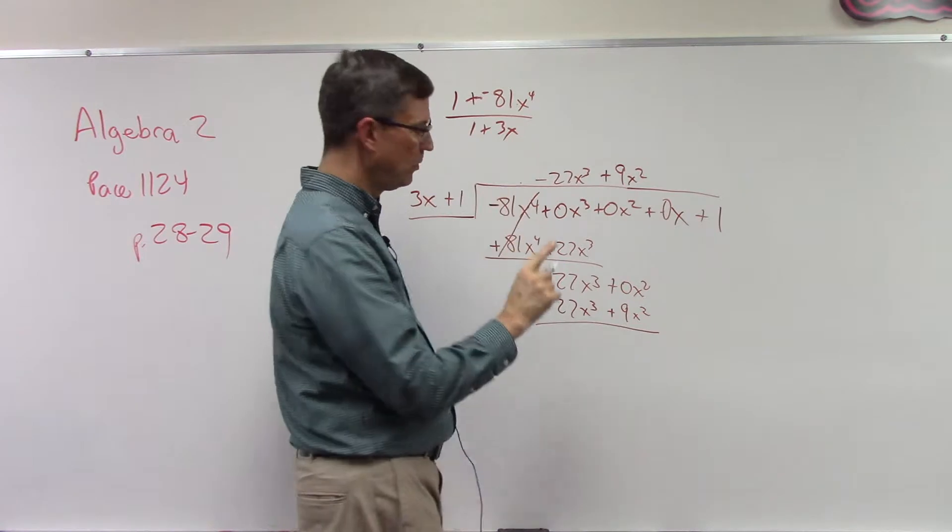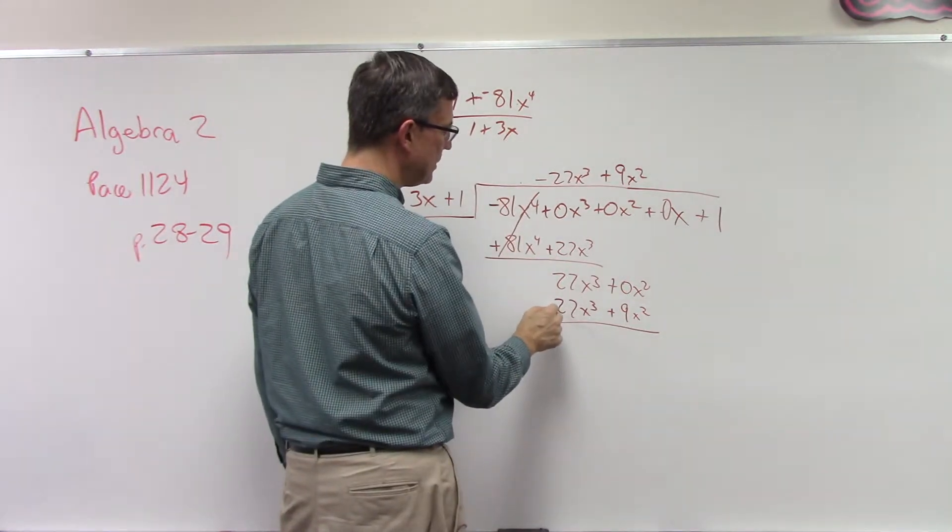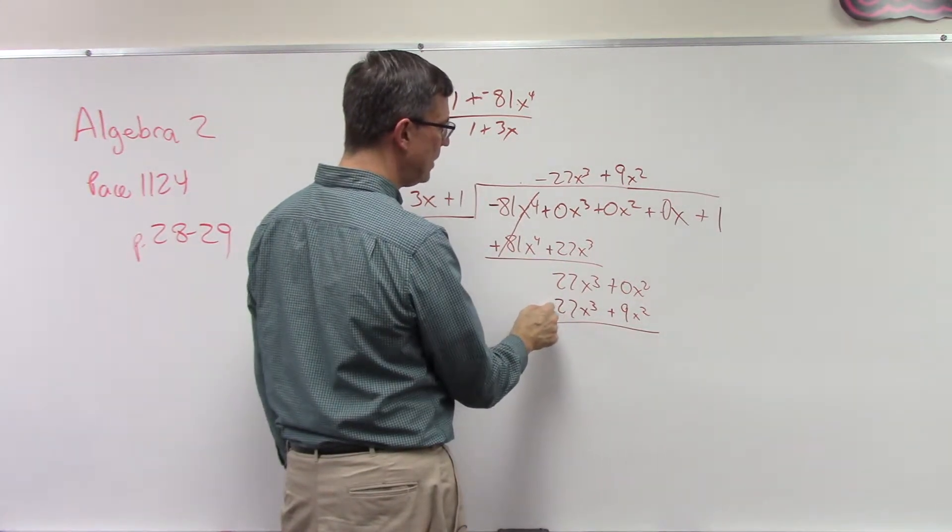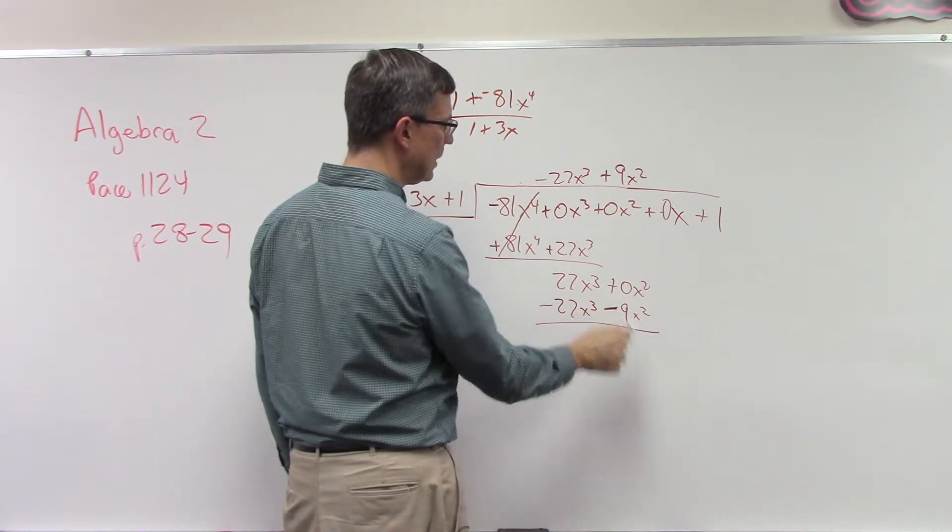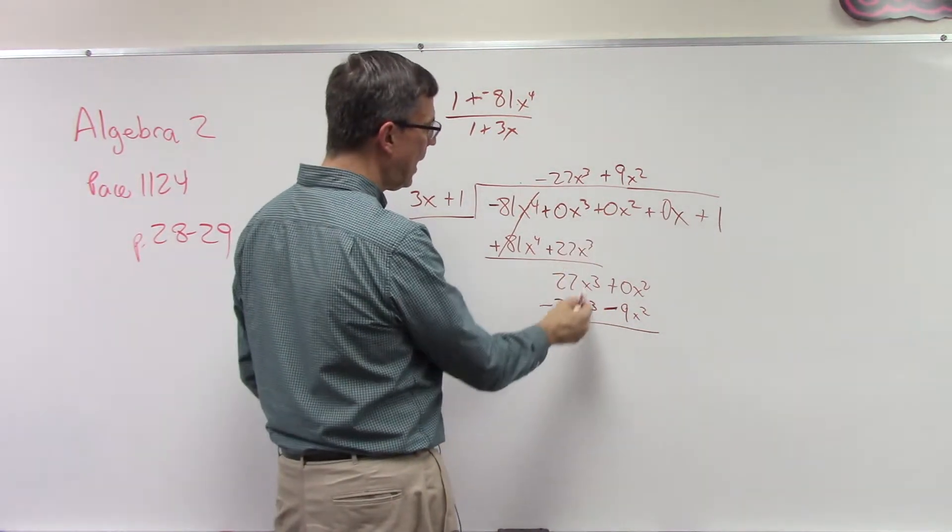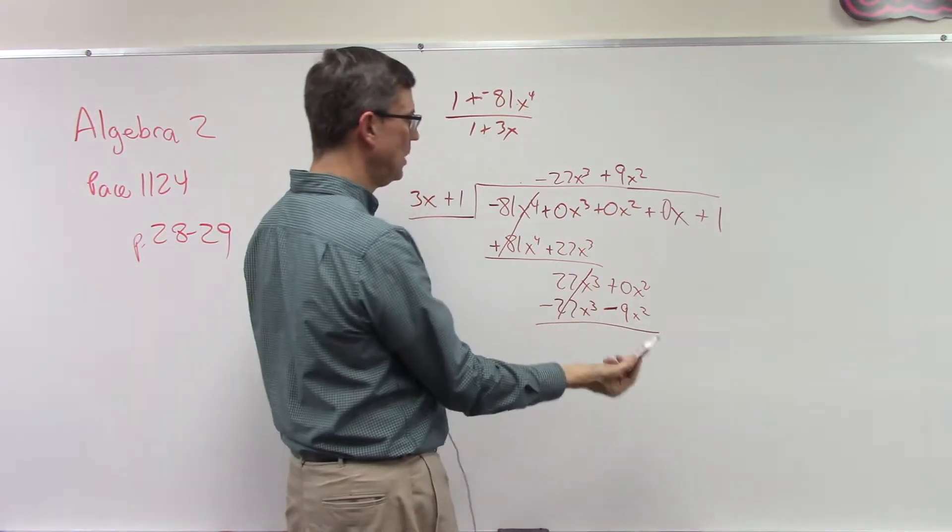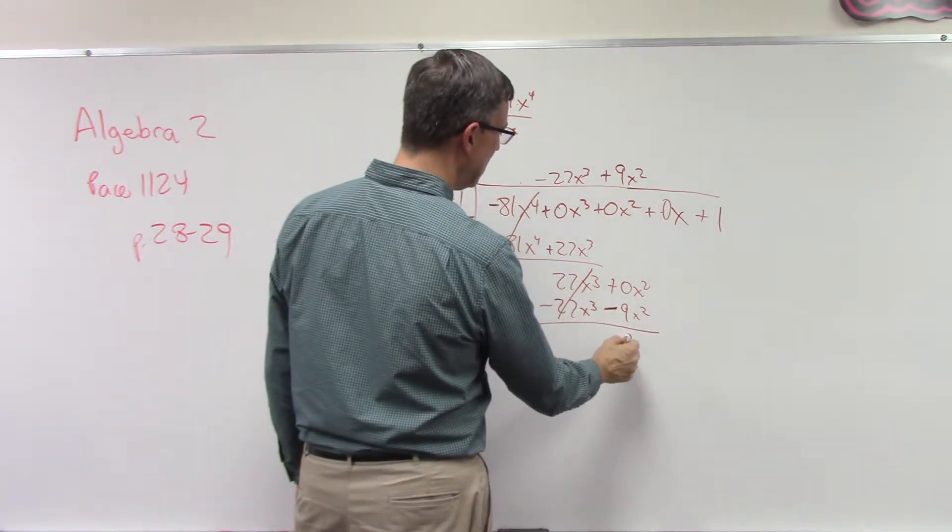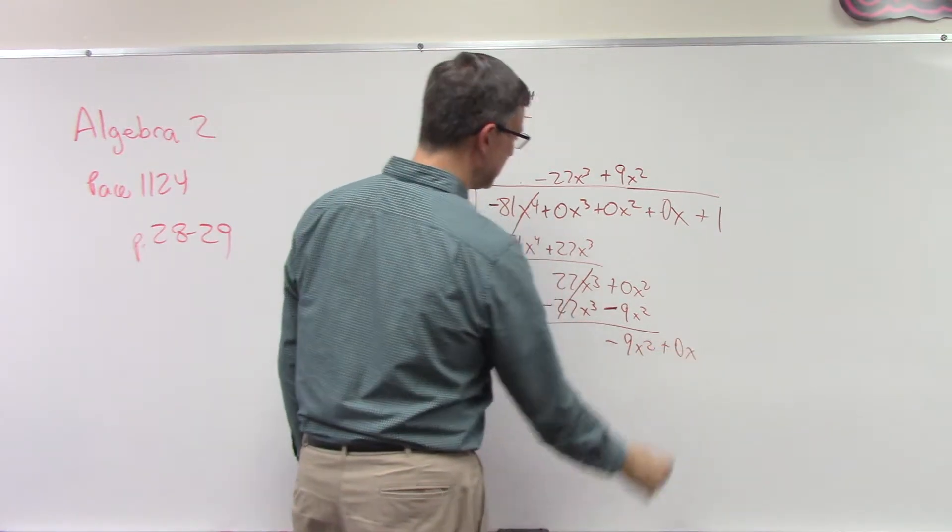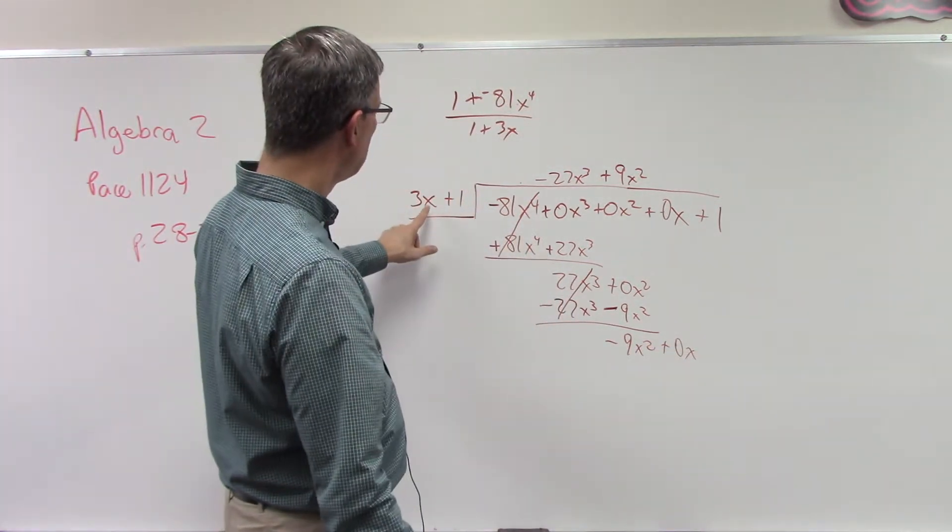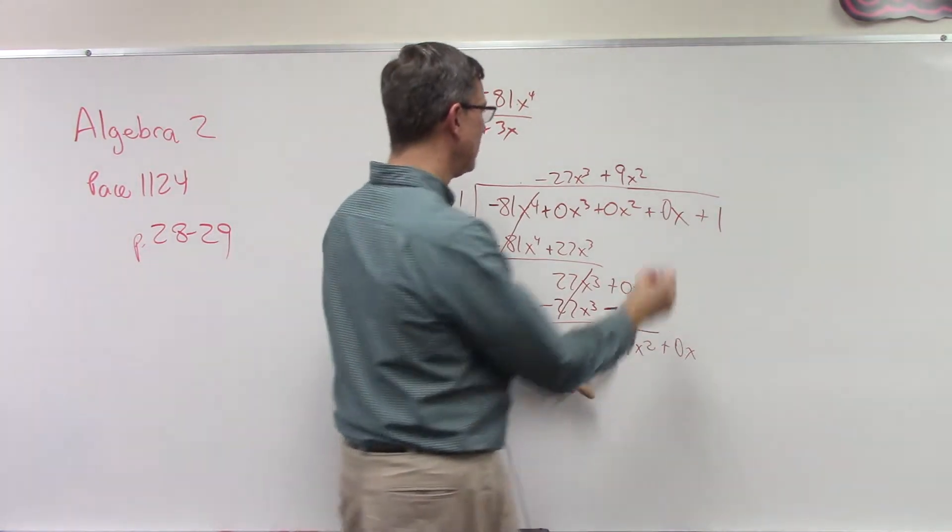So 9x squared times 3x is indeed 27x to the third. 9x squared times 1 is 9x squared. Now we're not done, remember we're going to change these to their opposites. This was positive, now it's negative. This was positive, now I'm going to make it negative. Now when I add this cancels.